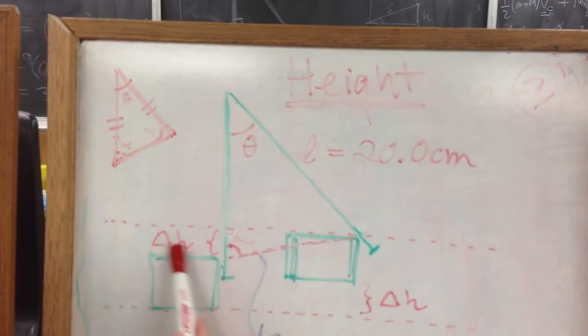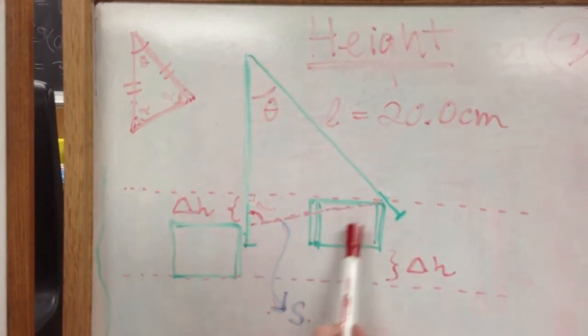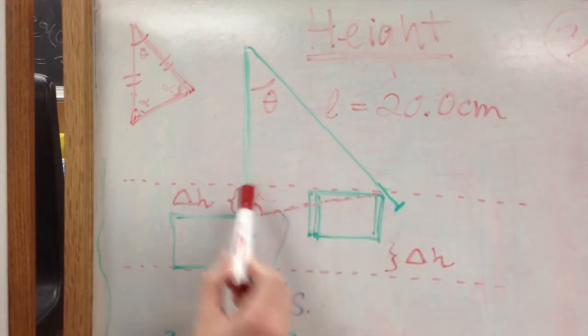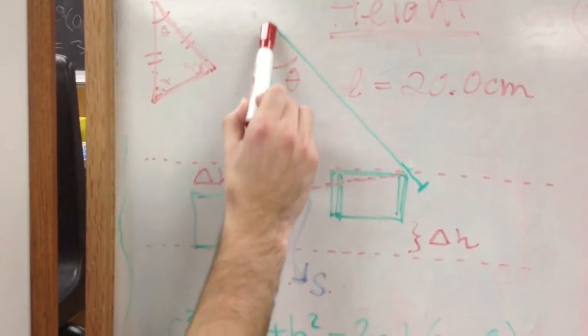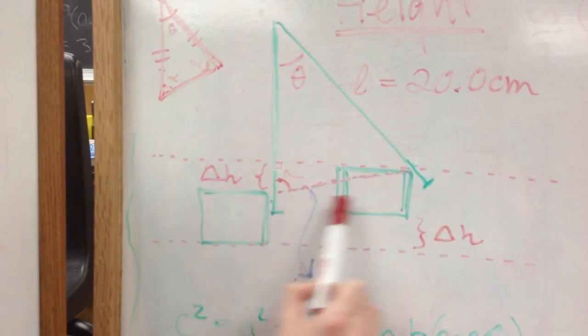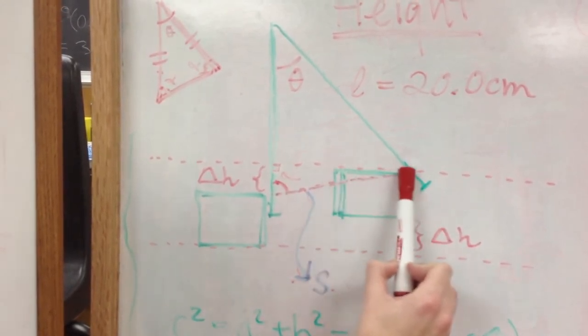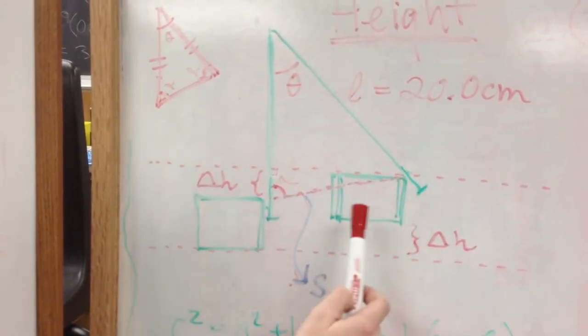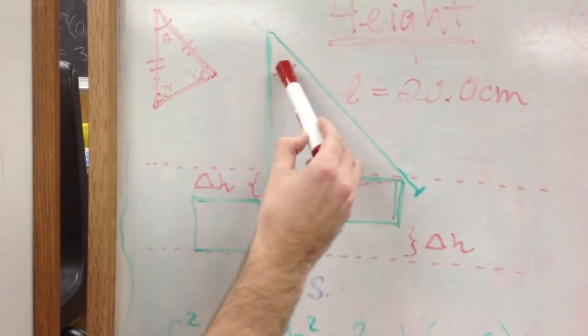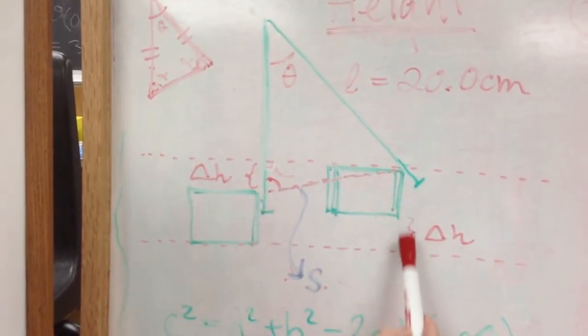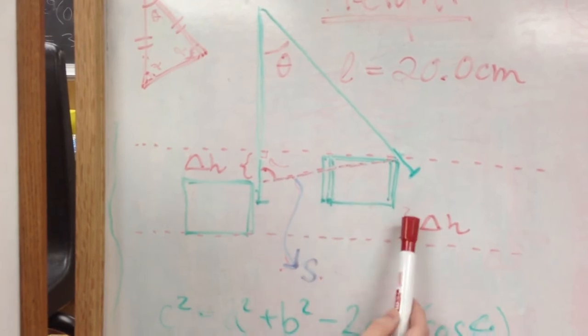Here we have the box in the beginning swinging forward over here. The stick, which was placed beside the box, is now moved forward by the top part of the box. We're going to say that this angle is theta, and this is the height that the box achieved.